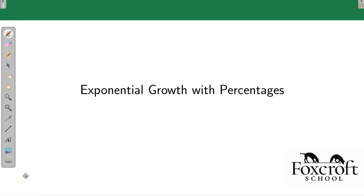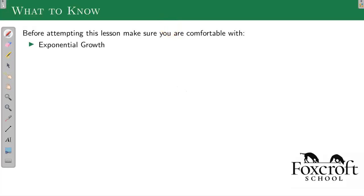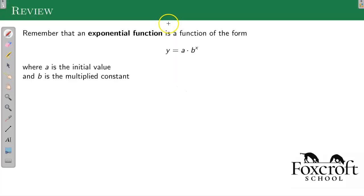In this video, we'll get more exponential growth, particularly when there's percentages involved. So we just talked about exponential functions, they always look like this. A is our initial value, B is the multiplied constant that we multiply by to get the next step.